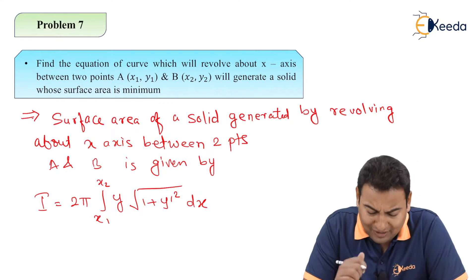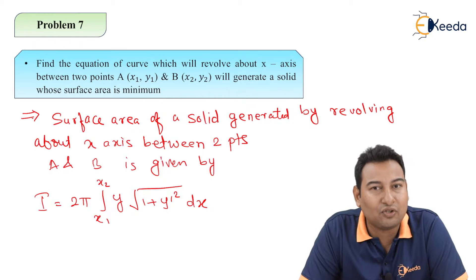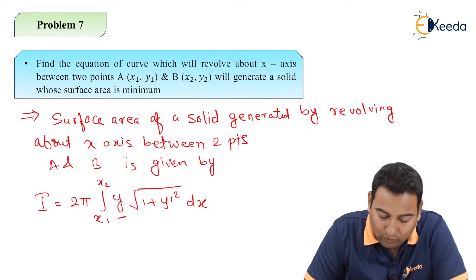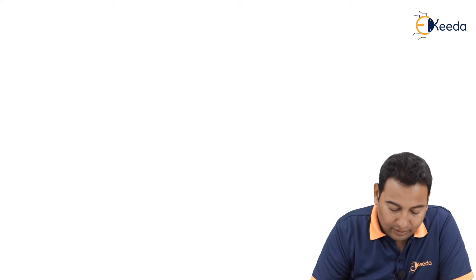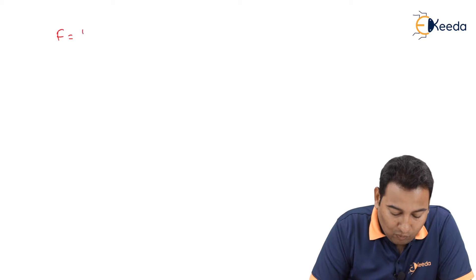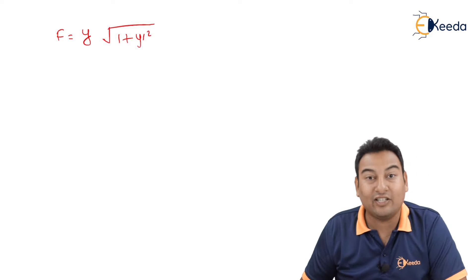If you compare this problem with the last problem that we solved, there is a difference of this y. The functional is y into root of (1 plus y dash square) — there is a slight change.